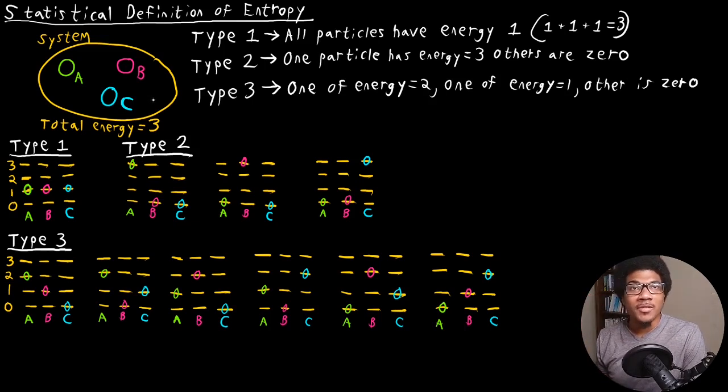If we think of a system being distributed in this fashion, we can imagine three different ways that we can distribute these particles and still get a total energy of three. The first way is if all the particles have an energy of one. If they each have an energy of one, they contribute one to the total energy, you get a total energy of three. The other way is if one particle has an energy of three and the other particles have an energy of zero. And the last type is type three, where one of them has an energy of two, the other has an energy of one, and the other has an energy of zero.